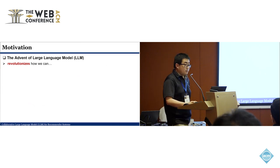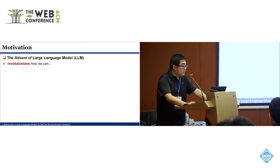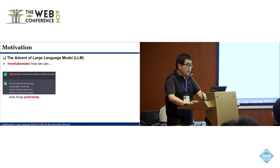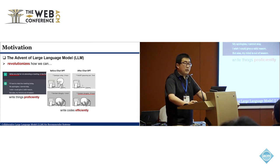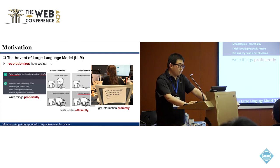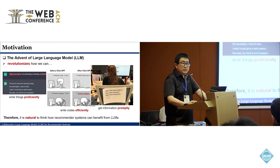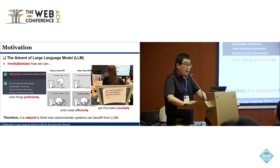Nowadays, large language models have become a very heated topic in both academia and industry. LLMs can be pre-trained on large-scale corpora, demonstrating emergent capability and unprecedented understanding of knowledge and patterns in natural language. They have revolutionized many aspects of our daily life — helping us write more proficiently, write code, and get information more promptly. It is therefore natural to think whether this success can be transferred to the field of recommendation. For this work, we develop next-generation recommender systems based on pre-trained large language models, trying to fully utilize their encoded knowledge, logical reasoning capability, and generative power to understand user-item semantics and make more accurate recommendations.